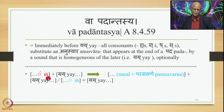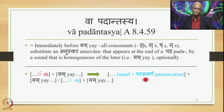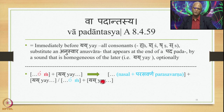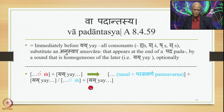So with Anuswara at the end of one pada followed by Yai at the beginning of a second pada, 8.4.59 generates two outputs: the nasal Parasavarana substituting the Anuswara plus Yai, or optionally the same Anuswara plus Yai unchanged. Both outputs are generated by 8.4.59.